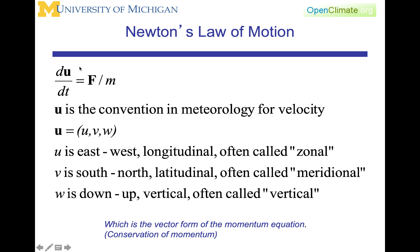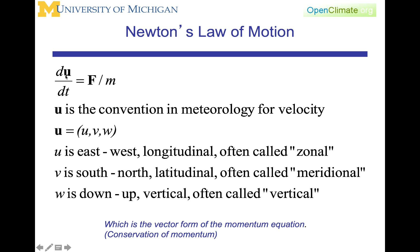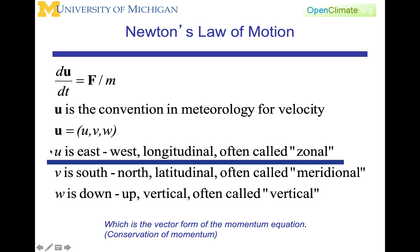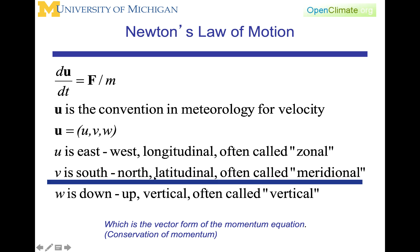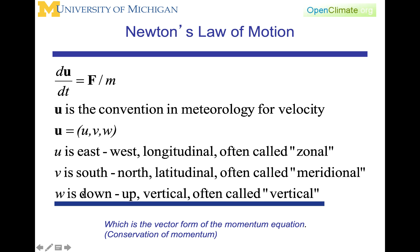Acceleration is defined as the change with time of velocity. By convention in atmospheric science, we use U to represent the velocity vector. Newton's laws of motion are written as dU/dt equals F divided by M. U is a vector, and its components are written as U, V, and W — with U being the longitudinal or zonal velocity in the east-west direction, V the north-south or meridional velocity, and W the vertical velocity.